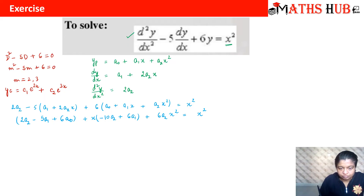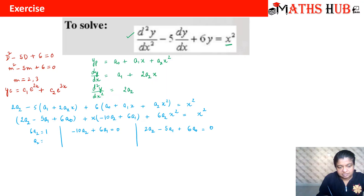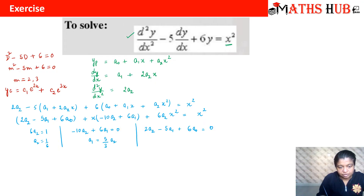Comparing coefficients on both sides: from x², 6a2 = 1, so a2 = 1/6. From x, −10a2 + 6a1 = 0, giving a1 = (10/6)·a2 = (5/3)·(1/6) = 5/18.